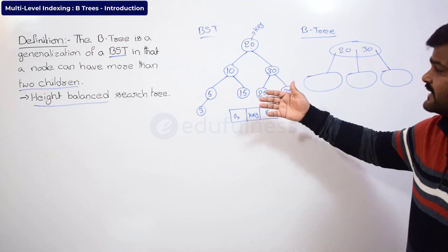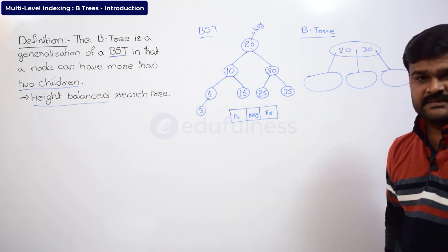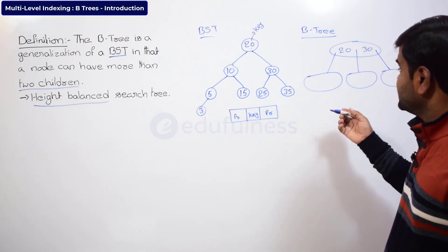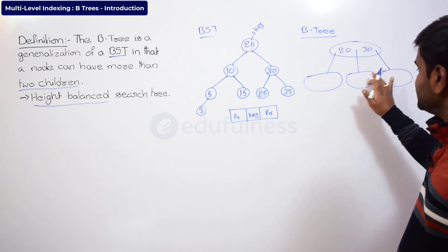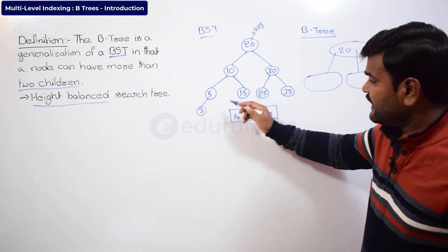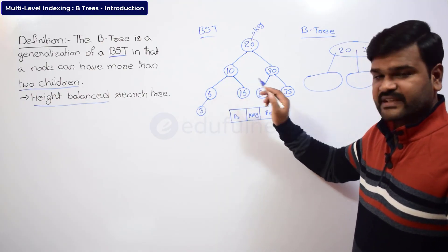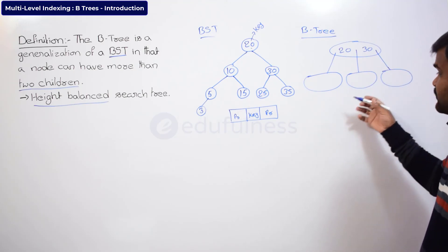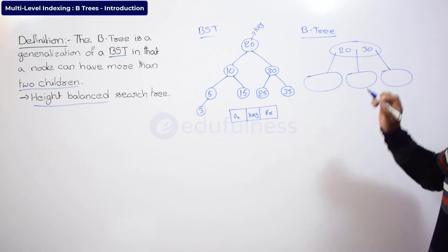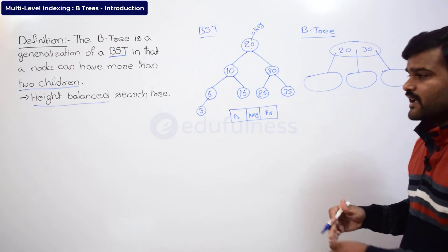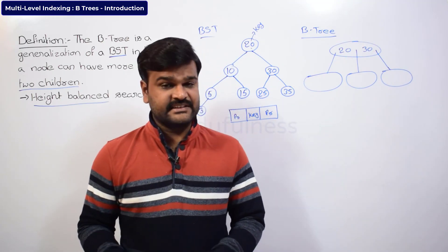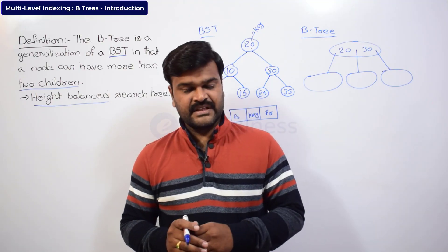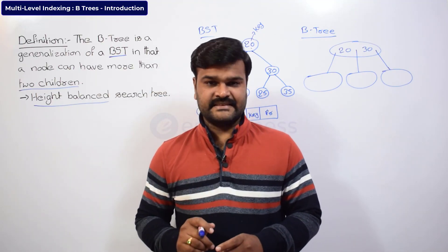In a B-tree, you don't always need exactly three children. A node may have one, two, or three children — at least two children and at most three children in this example. Based on this discussion, we will next explore the properties and formulas related to the node structure of a B-tree.